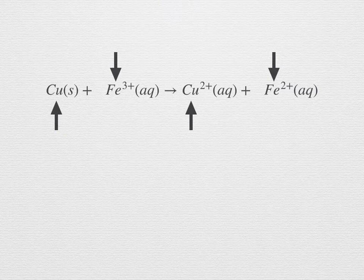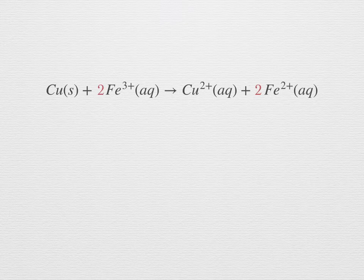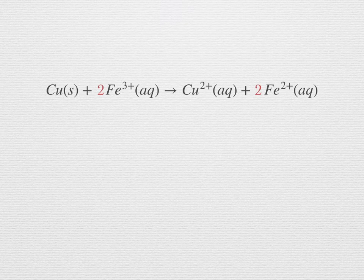Copper is being oxidized and goes from an oxidation state of 0 to +2 — it loses two electrons. On the other hand, iron is being reduced from the +3 state to the +2 state, so an iron atom only picks up one electron. In order to balance the electron transfer, two iron atoms must change oxidation state every time one copper atom does. The balanced equation is Cu + 2Fe³⁺ → Cu²⁺ + 2Fe²⁺. The balanced equation has +6 on the left and +6 on the right — both mass and charge are conserved.